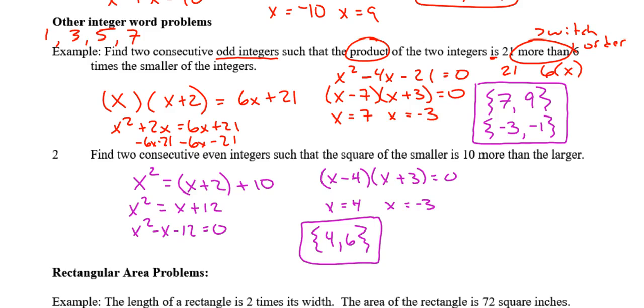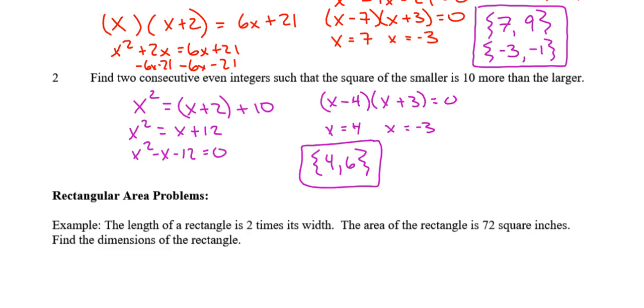Okay, this problem was a little trickier. Hopefully you were able to figure it out. It started with two consecutive even integers, x and x plus 2. But then it said the square of the smaller, so that's x squared. There's my is, which equals 10 more than the larger. The larger was x plus 2, and 10 more than means I add 10. The hardest part was getting it set up. You should be able to factor it. I got x equals 4 and x equals negative 3. But it's even integers, and negative 3 is not an even integer, so I cross that off. The only solution is 4 comma 6.